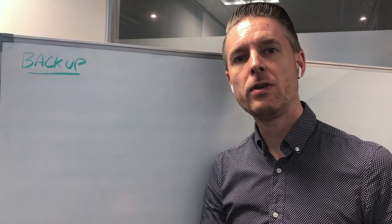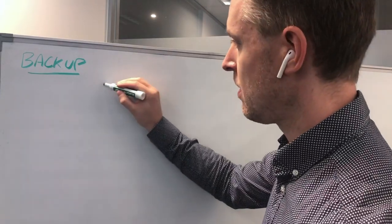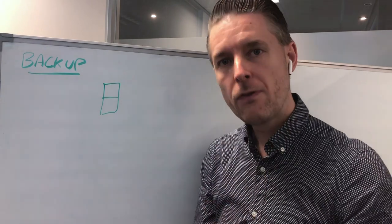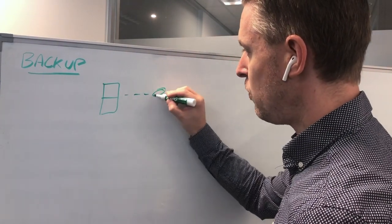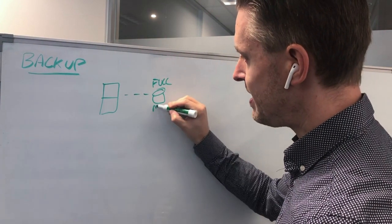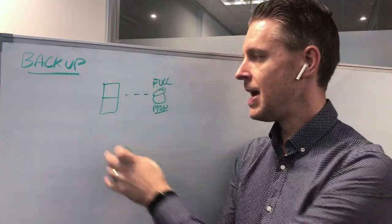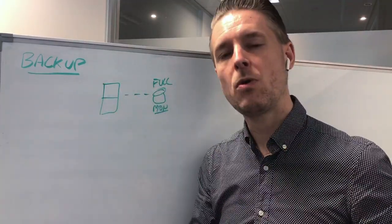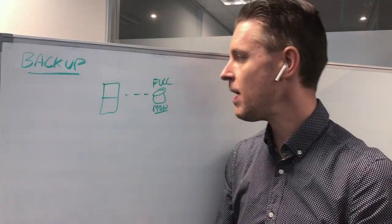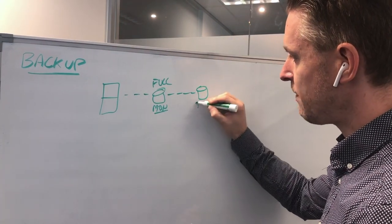Here's a quick overview of incremental and differential backups and the differences between each of them. I've got a server here that has never been backed up before. The very first backup is always going to be a full backup — this could be done on a Monday, for example. This first full backup contains a copy of everything determined to be backed up: files, folders, or the entire VM, whatever it may be.